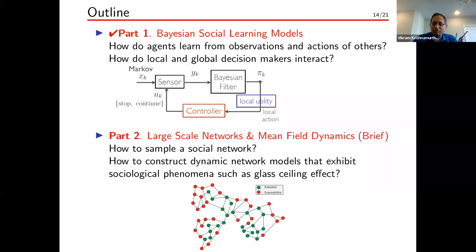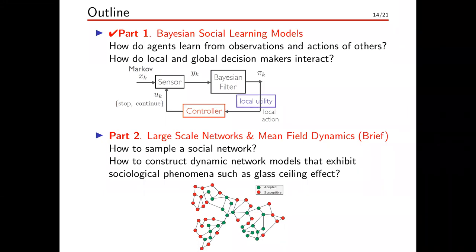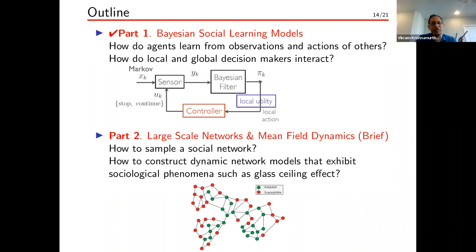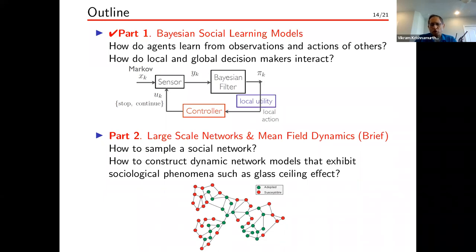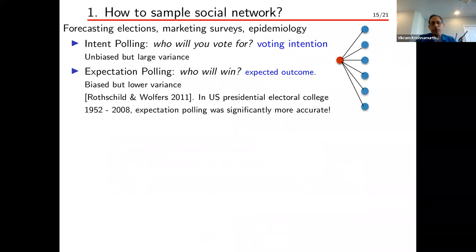In the last few minutes, briefly covering part two. In part one we discussed human decision makers in a stylized environment using behavioral economics models. In part two, we take human decision makers in a large social network such as Facebook or Twitter, looking at two things: how to sample a social network, and how to construct useful models for sociological effects. Due to time constraints, we focus on the sampling part.